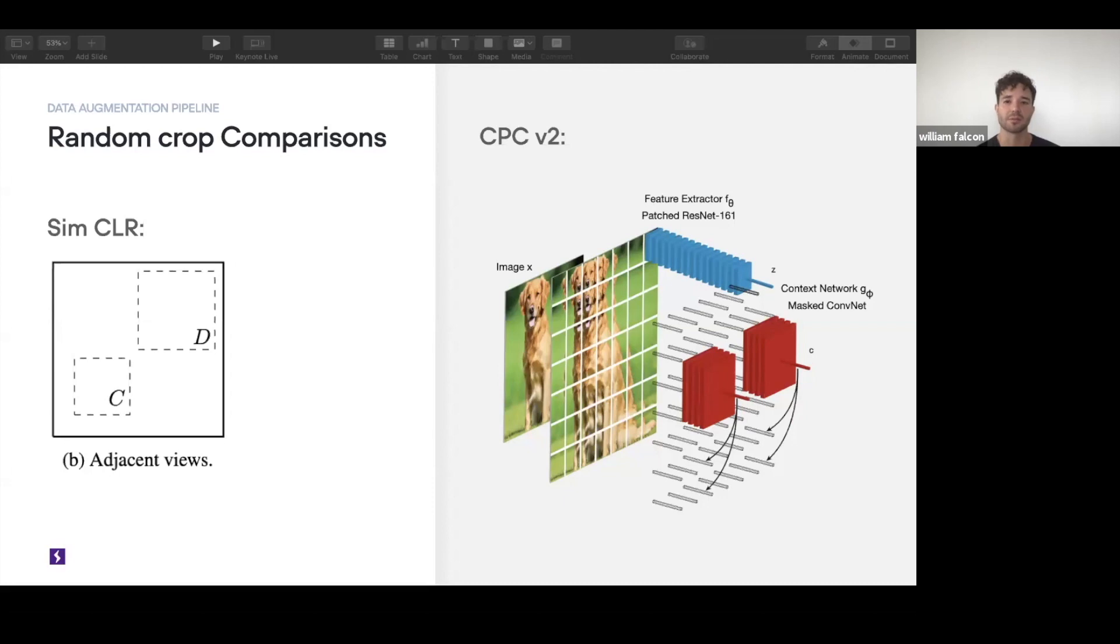CPC v2 is a contemporary paper to AMDIM. They were coming out around the same time, within a few months of each other and they both were trying to do the same thing. CPC, instead of taking a single image and applying two sets of transforms to get two versions of that image, what CPC did is they took a single image and then they calculated these overlapping patches. What you can see, it's like eight by eight overlapping patches. So you can think about it as 64 samples of that image, where each one captures a different part of it.